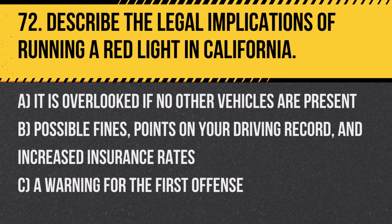Question 72: Describe the legal implications of running a red light in California. A. It is overlooked if no other vehicles are present. B. Possible fines, points on your driving record, and increased insurance rates. C. A warning for the first offense. Answer: B. Possible fines, points on your driving record, and increased insurance rates. Running a red light is a serious traffic violation with significant penalties.